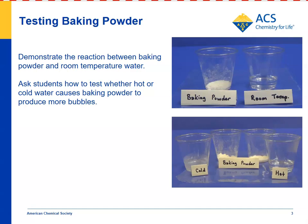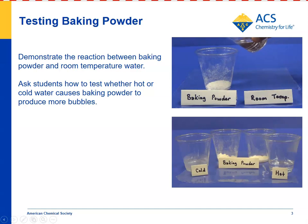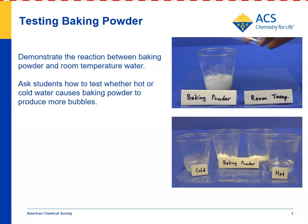You can show students baking powder in room temperature water — this room temperature water has one drop of detergent solution in it — just so that any carbon dioxide that's released, students will be able to see it for a little longer. The question for students is: how could we design an experiment to see if the temperature of the water matters?